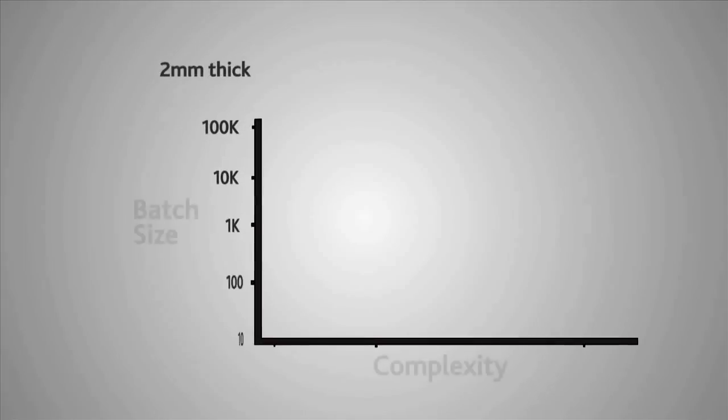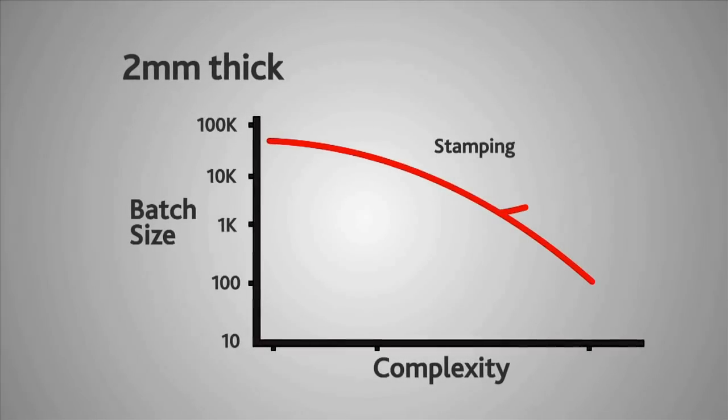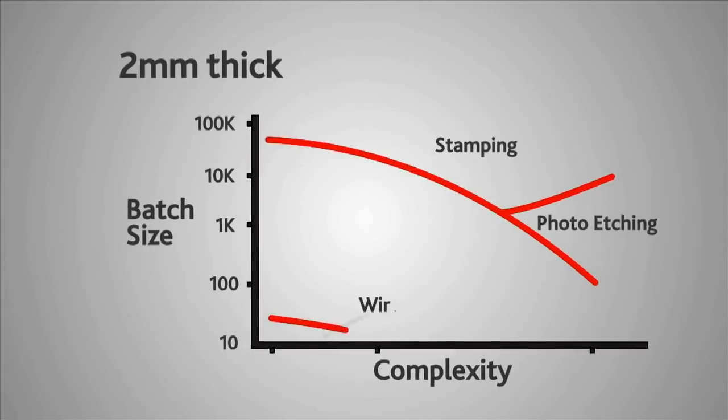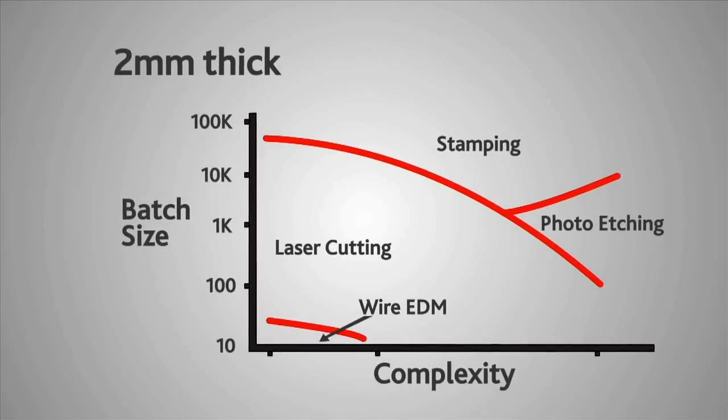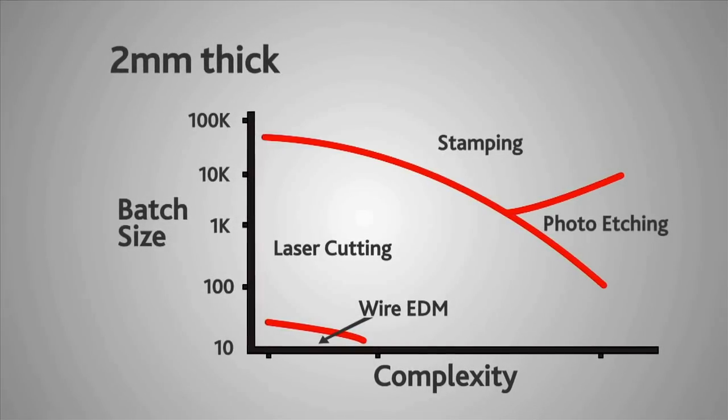If we look at a two millimeter thick simple component, it becomes less economic to make small quantities by wire electrode discharge machining, and photo chemical machining is pushed out to a certain extent by laser cutting because it takes a long time to etch through very thick material.